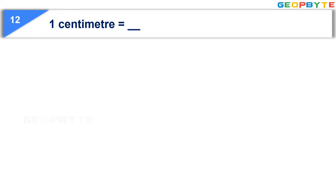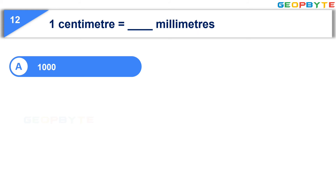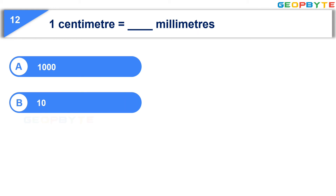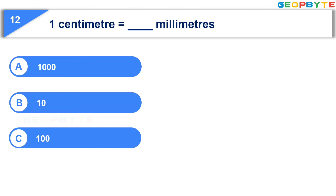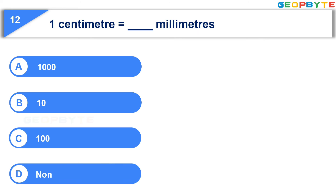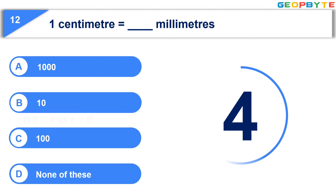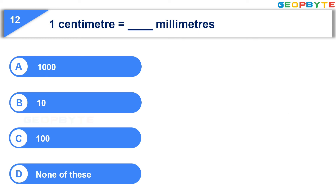Next question: One centimeter is equal to how many millimeters? Option A: thousand, Option B: ten, Option C: hundred, Option D: none of these. Your time starts now. Your time is up and the correct answer is Option B: ten.